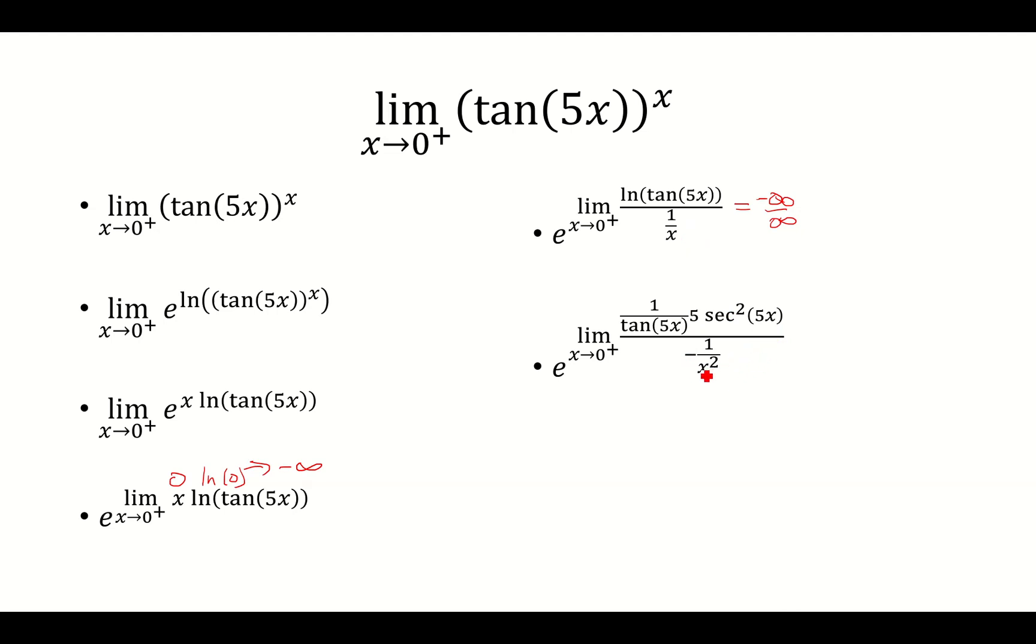I'm going to rewrite this. So basically, the x squared gets multiplied to the top, and then the tangent 5x comes down to the bottom. So it's negative 5x squared secant squared 5x over tangent 5x.